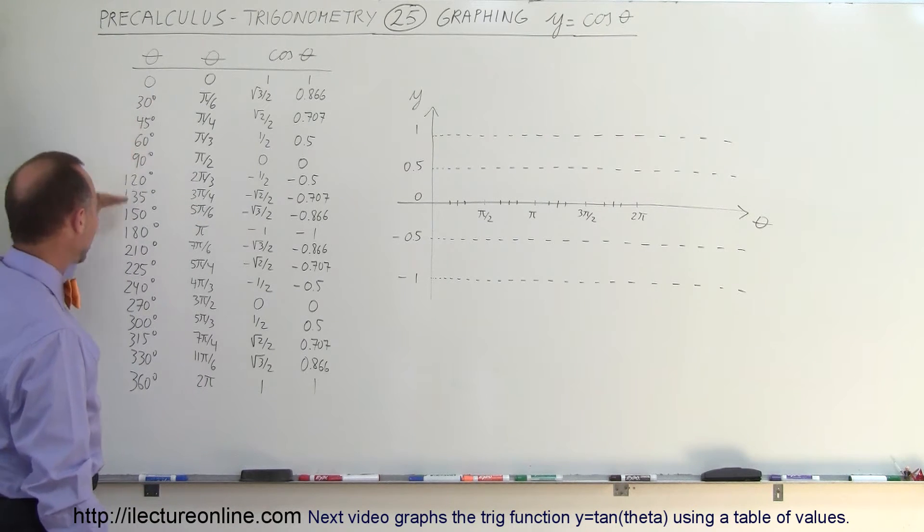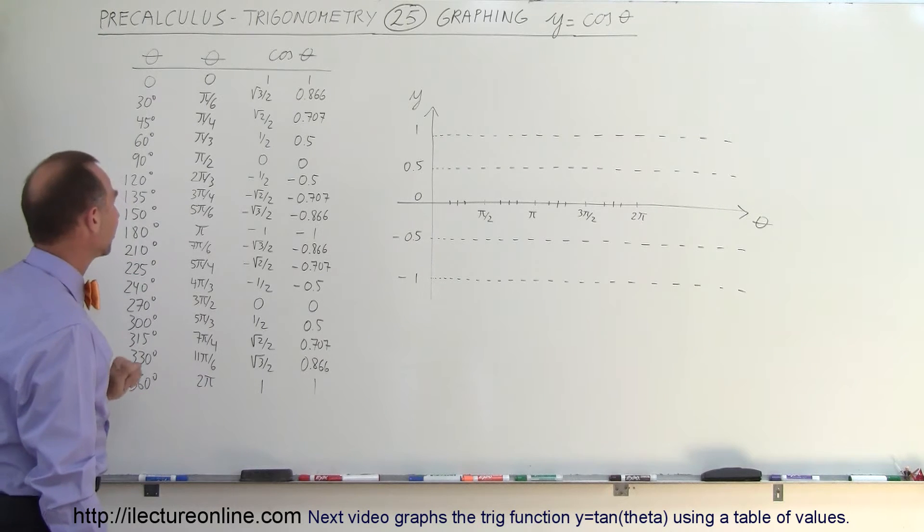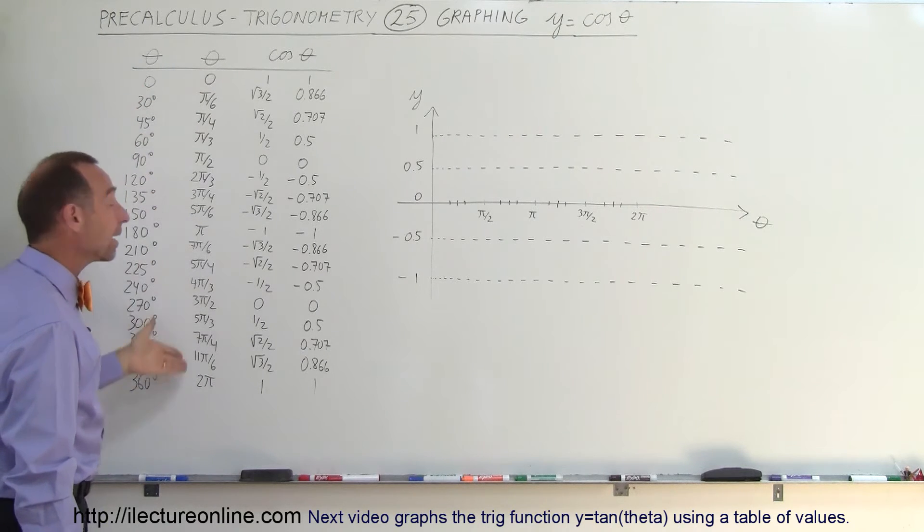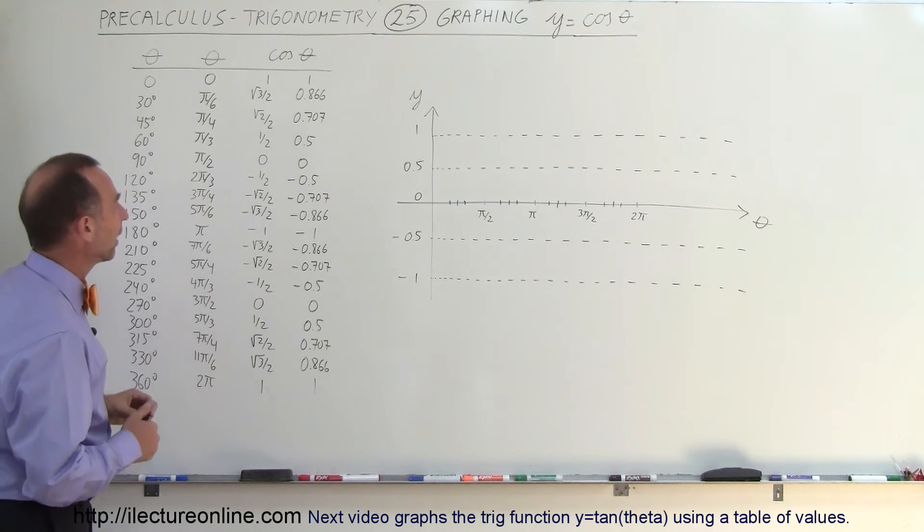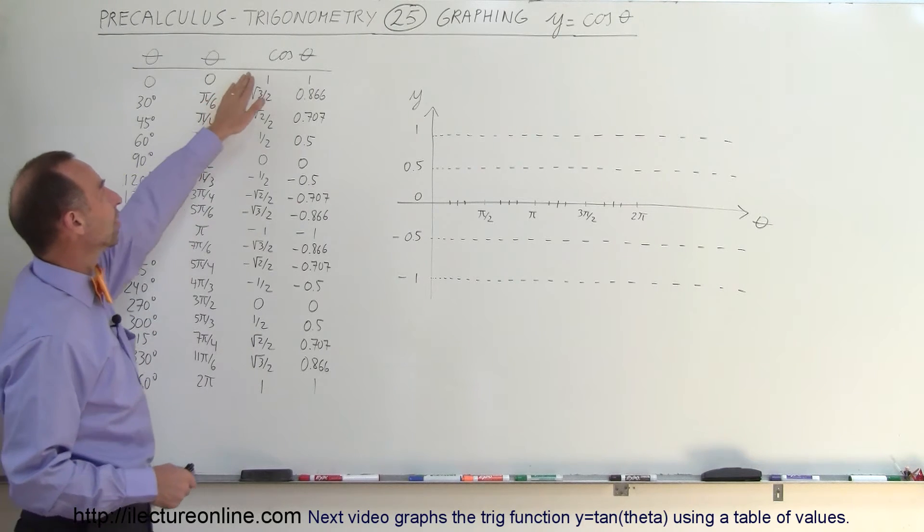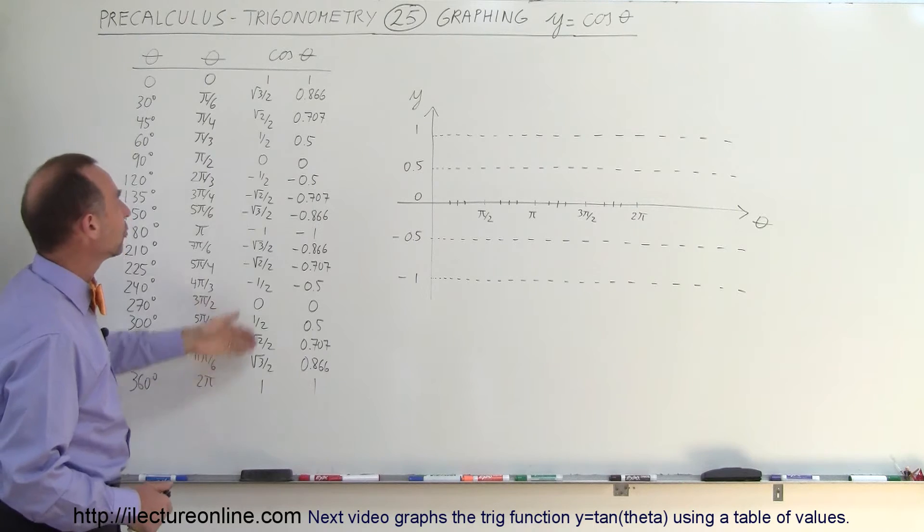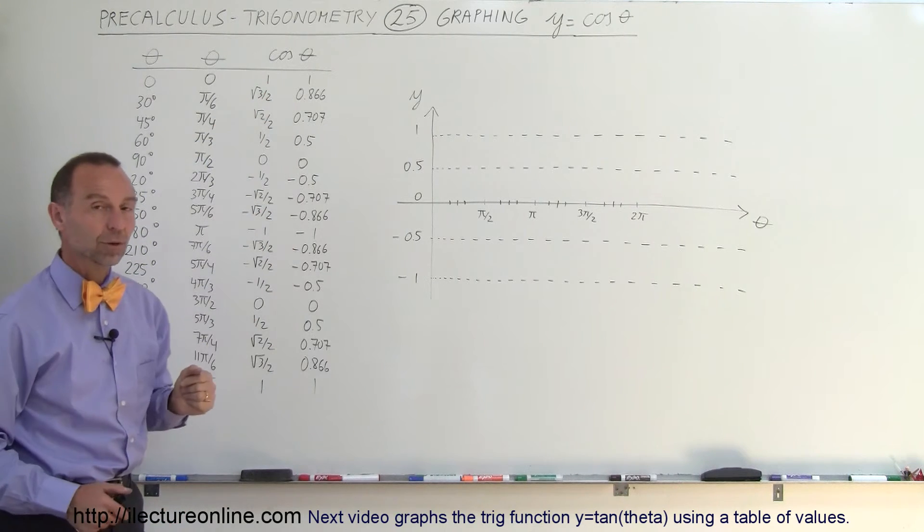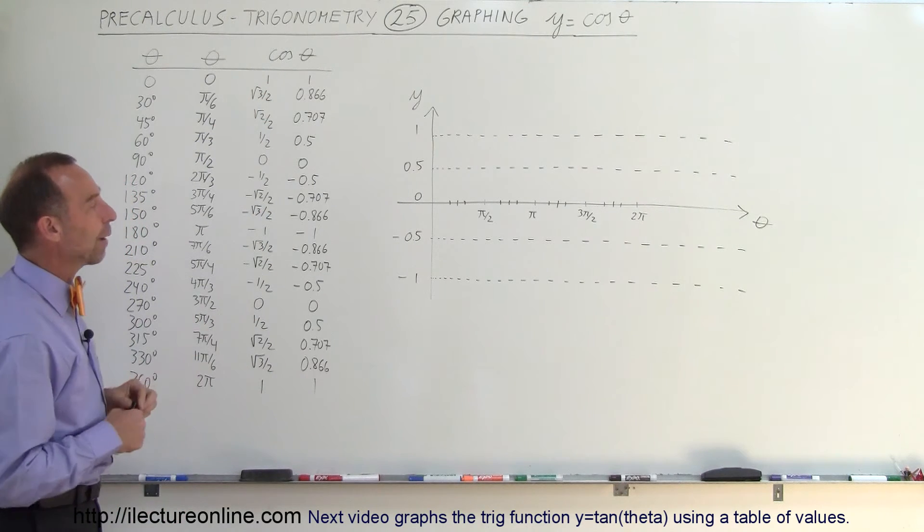45, 60, 90, and then repeated that all the way through to 360, and we have the associated angle in radians as well. On top of that, we have the cosine of the angle in terms of square roots and in terms of decimals, and the decimals make it easier to graph.